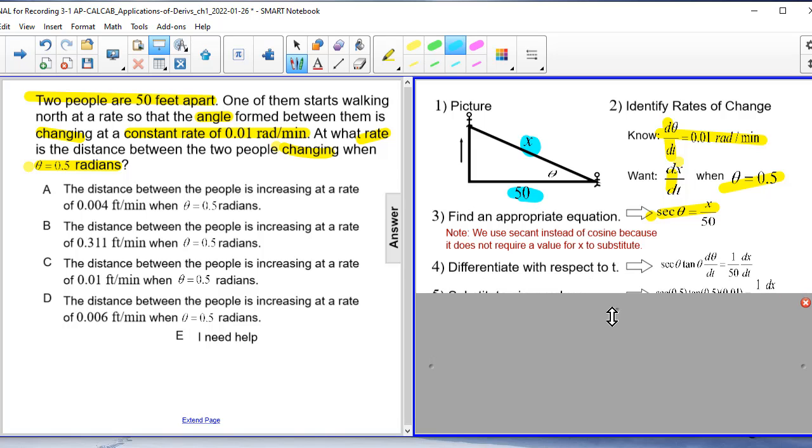Let's move on to differentiating. So when we differentiate the secant of theta, that's going to be secant theta tangent theta. And don't forget your d theta dt. The derivative of x over 50 becomes 1 over 50 dx dt.